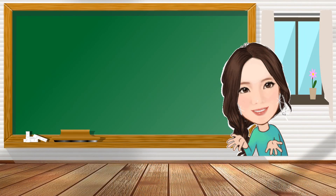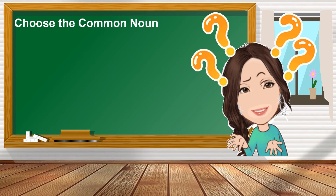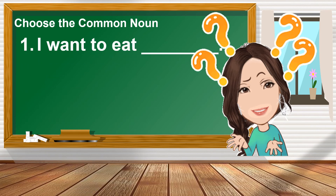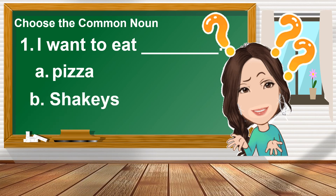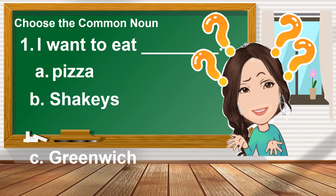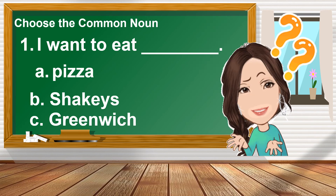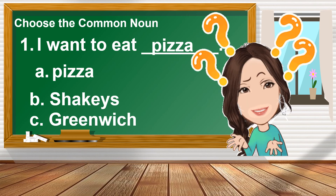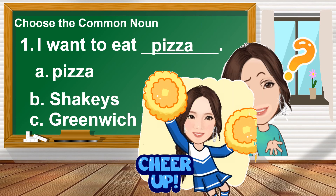Let us practice. Number one: choose the common noun. I want to eat blank. A. Pizza. B. Shakey's. C. Greenwich. What is the common noun? The answer is pizza.